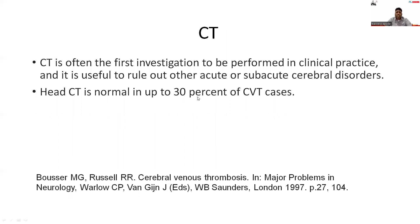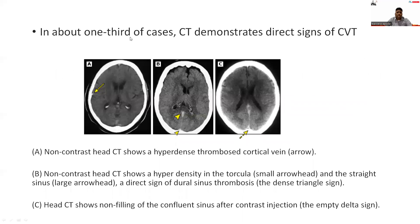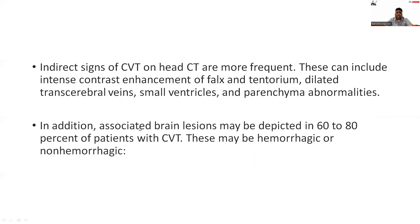CT is often the first investigation performed in clinical practice and is useful to rule out other acute or subacute cerebral disorders. However, head CT is normal in up to 30% of CVT cases. In about one third of cases, CT demonstrates direct signs of CVT. Diagram A shows a non-contrast CT scan with a hyperdense thrombosed cortical vein. Figure B shows hyperdensity in the straight sinus, a direct sign of dural sinus thrombosis known as the dense triangle sign. Diagram C shows a non-filling defect of the confluent sinus after contrast injection, known as the empty delta sign. Indirect signs on CT include intense contrast enhancement of the falx and tentorium, dilated transcortical veins, small ventricles, and parenchymal abnormalities.